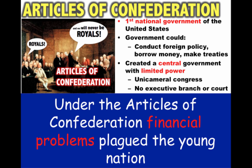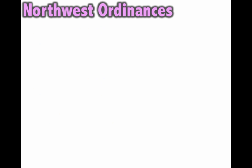A big thing that happens under the Articles of Confederation is that financial problems plagued the young nation. There was a large debt as a result of the American Revolution, paper money was being printed and it was worthless, there's no ability to tax, and you had to rely on the states to just send money to the government — and it's not going to work out very well.